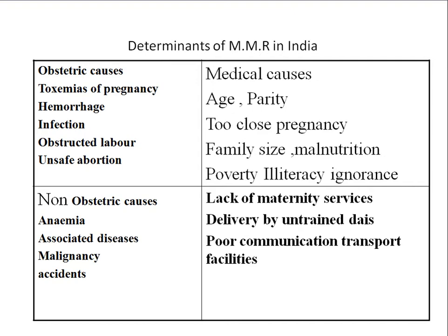During the antenatal period, infections such as reproductive tract infections, tuberculosis, HIV, or syphilis must all be treated completely. This prevents infection during the postnatal period. The MPHW-F should follow up cases and refer any infection to the medical officer at the primary health center.